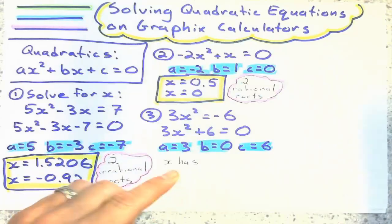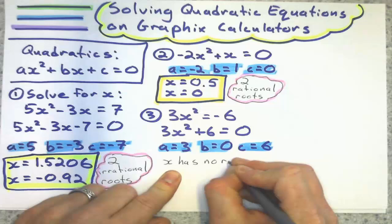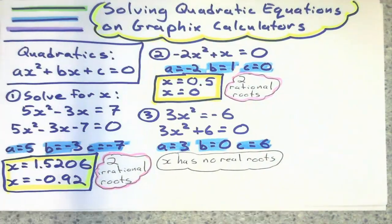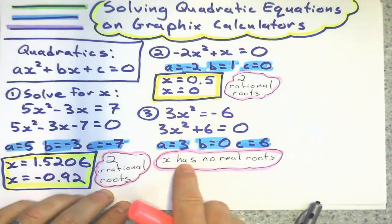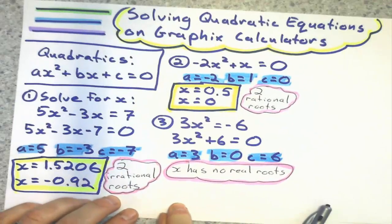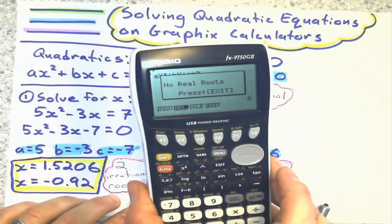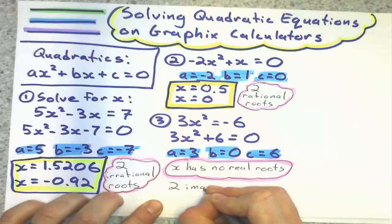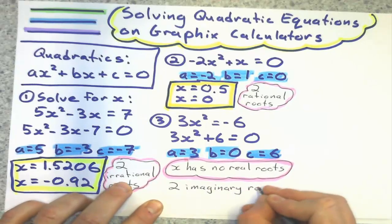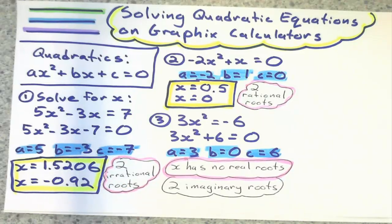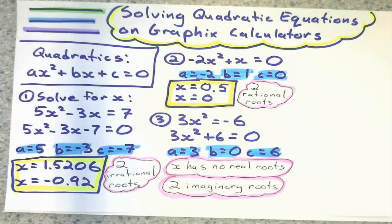So since it's no real roots, we're going to say x doesn't equal any real number. x has no real roots. Now, by saying that, by saying that x has no real roots, that's much better than saying x has no solution because it does have a solution. It's just not a real number solution. So when we get this on the graphics and it says this, we can put no real roots or we can put it has two imaginary roots. Let's be positive. Let's not be negative and say x has no real roots. Let's say it does have roots. They're just imaginary numbers, which we could solve with the quadratic formula. We could use a quadratic formula and get some complex numbers for the solution.